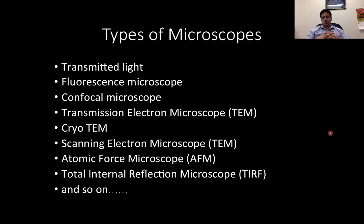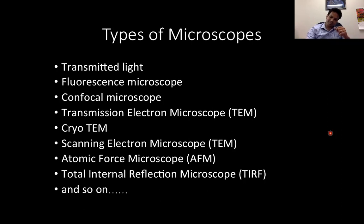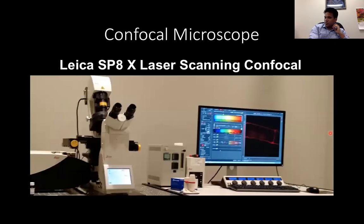Everyone needs to understand the importance and basics of how lenses work. I won't go into detailed physics about numerical aperture here, but it is important to know those aspects — that is how you will decide which instrument or technique you want to use for your particular sample or experiment. So first, I would like to talk about confocal microscopy. This is a Leica SP8 laser scanning confocal microscope — what we have here at the facility.